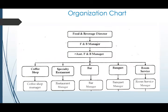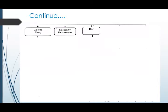So this is the basic managerial hierarchy for a Food and Beverage Service Department. It starts with the Food and Beverage Director, followed by the F&B Manager, then the Assistant F&B Manager. Under the Assistant F&B Manager, we have the various outlets with their in-charge: Coffee Shop Manager, Specialty Restaurant Manager, Bar Manager, Banquet Manager, and Room Service Manager. These outlets exist within the Food and Beverage Service Department of a 5-star hotel, each with further hierarchy below them.